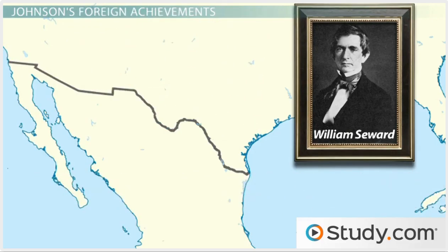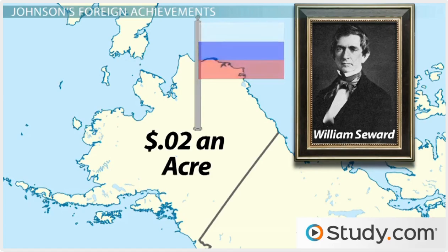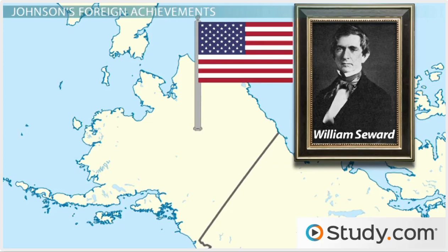The Johnson administration also resolved an issue to the North in 1867, when Russia offered to sell its American holdings to the United States. The fur trade in Alaska had dried up. Russia needed the money and was afraid that Great Britain might go to war with them to seize the land anyway. Russia figured they might as well sell it while they still had the chance. Secretary of State Seward offered two cents an acre for the territory. Many Americans were dumbfounded that the government, heavily in debt from the Civil War, would spend millions of dollars for a frozen wasteland with no foreseeable strategic or economic value. They ridiculed the purchase, calling it Seward's Folly.